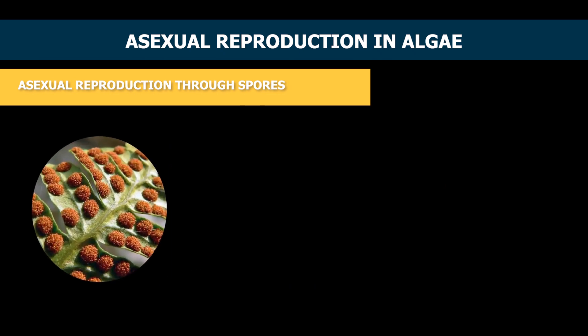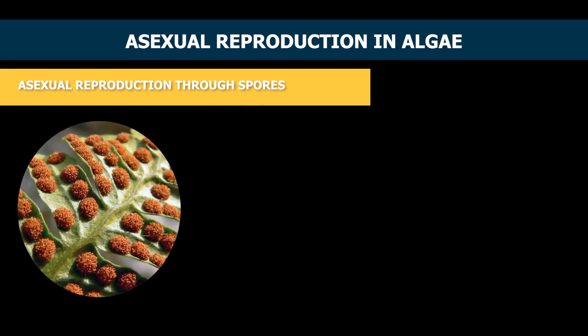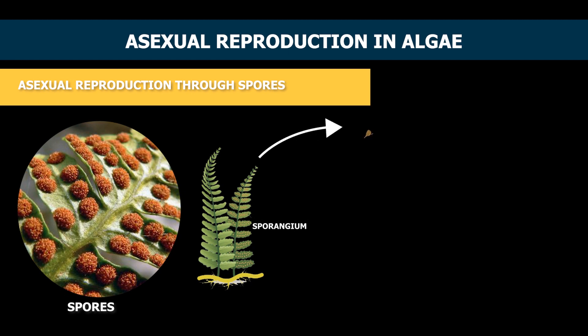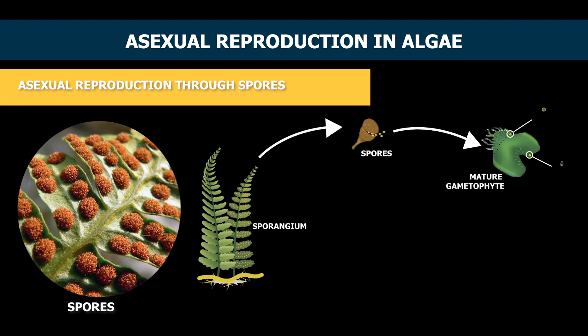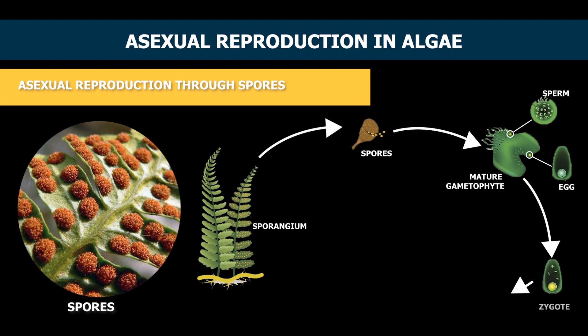Asexual reproduction through spores. Spores are small cells which germinate to become full-grown plants. In this reproduction, spores produce male and female gametes, and then these gametes fuse together to form a zygote which grows into a plant.